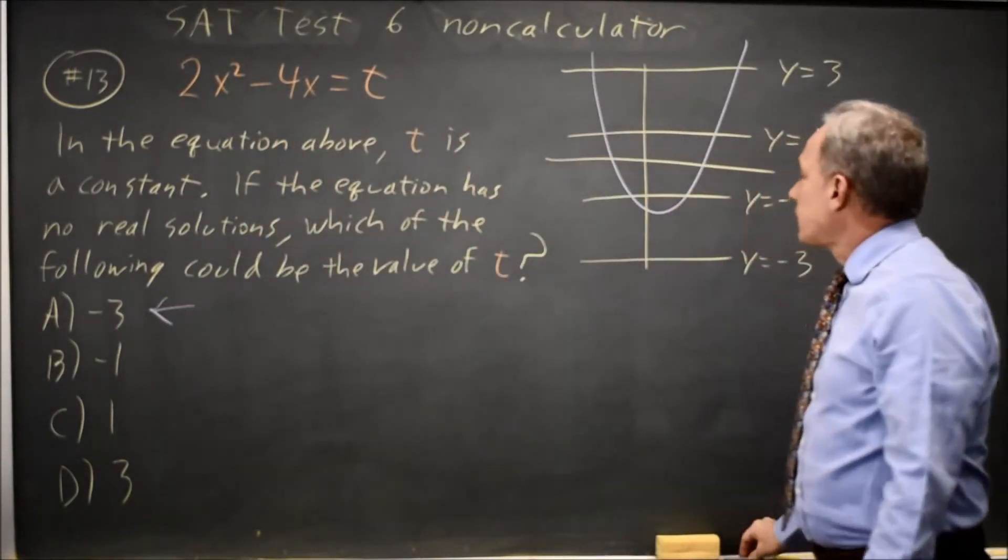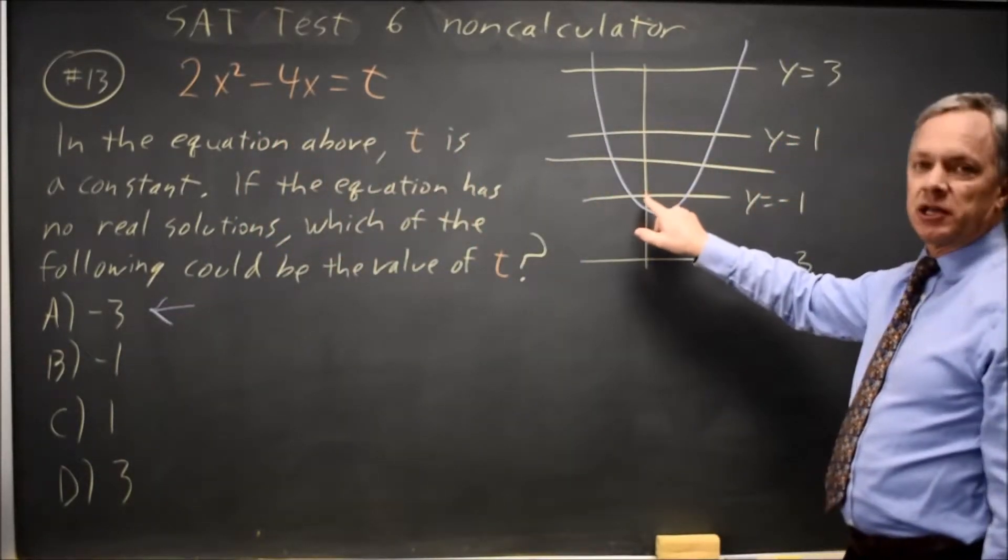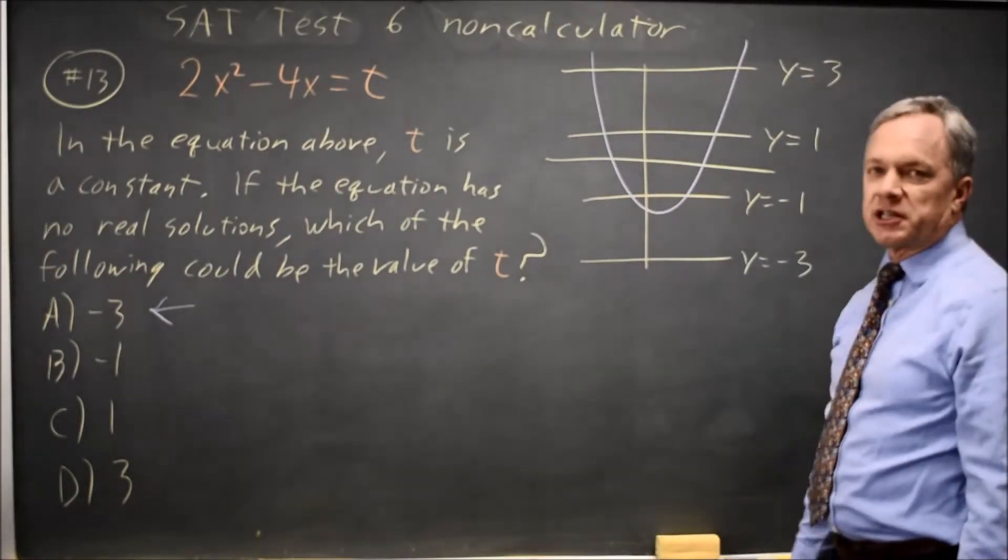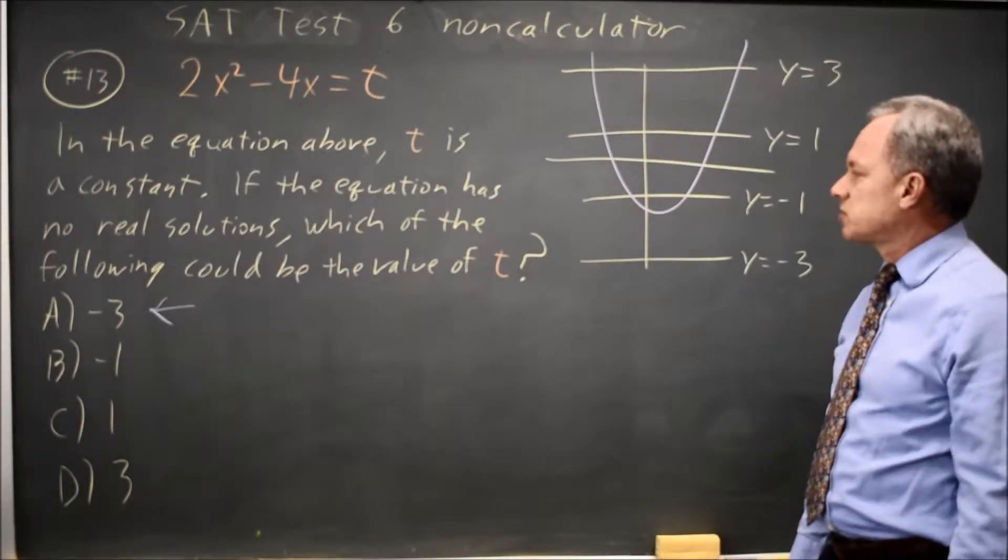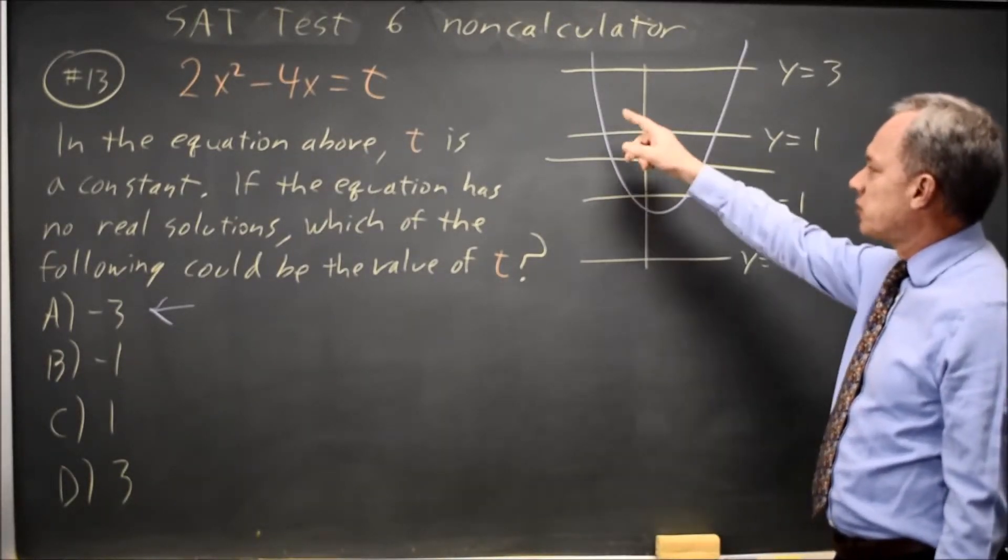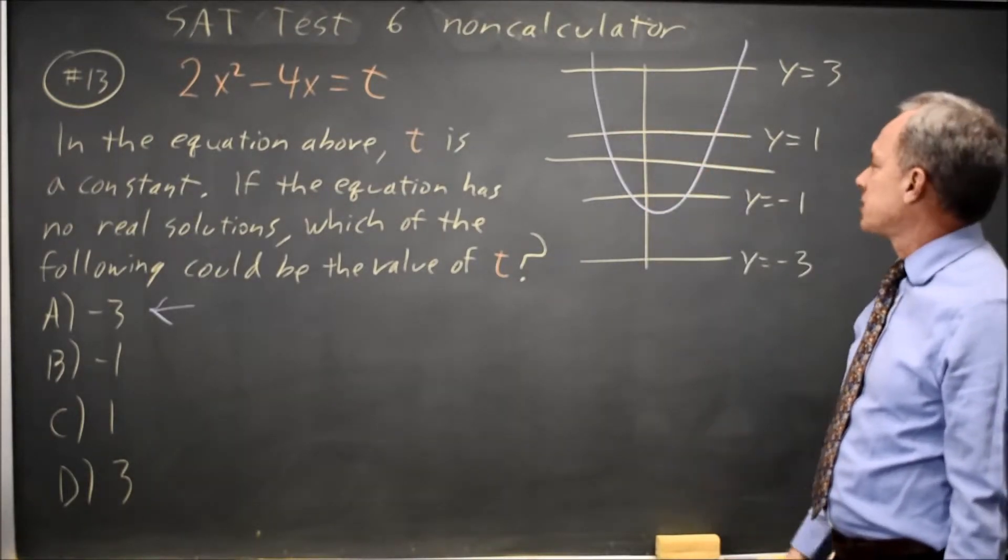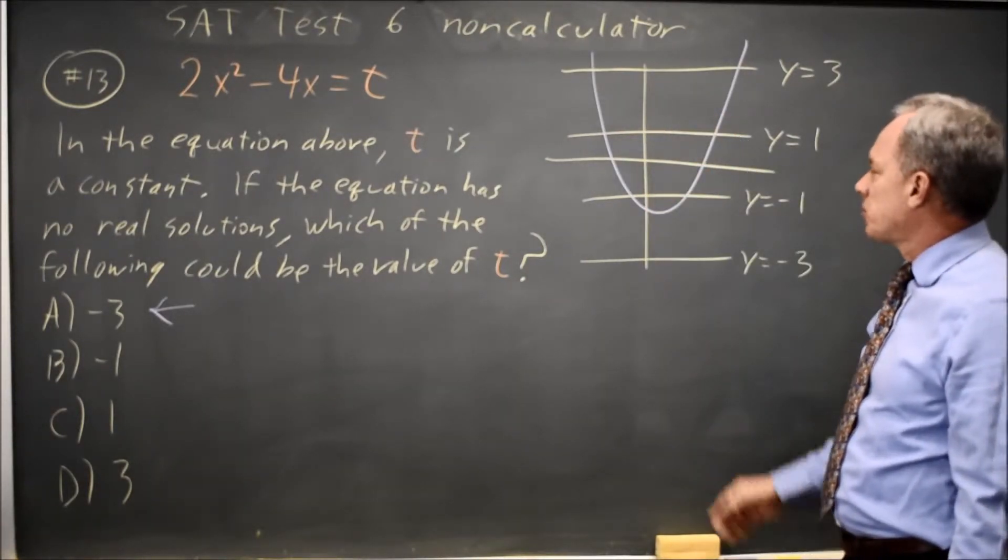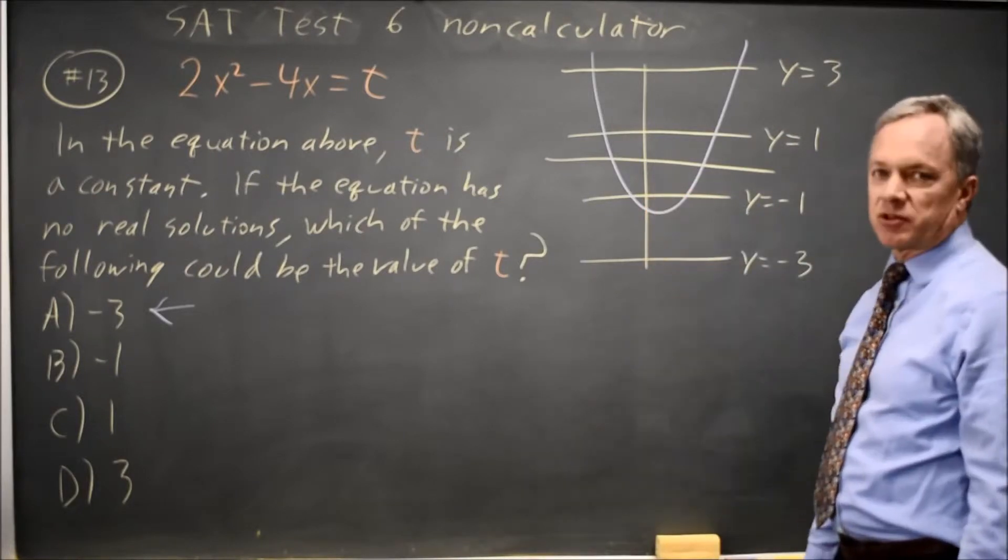If you had a parabola that opened up and also did not hit negative 1, there would be two correct answers, and College Board doesn't do that. There's only one correct answer, and if it opens up, it hits all values above the vertex, so the vertex must be somewhere below negative 1 but above negative 3.